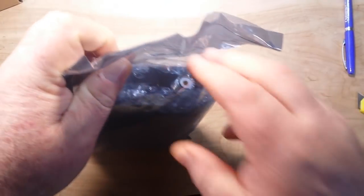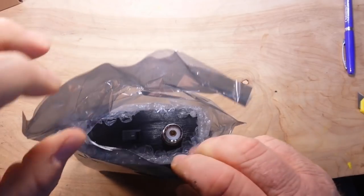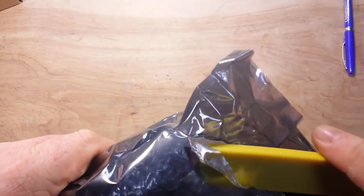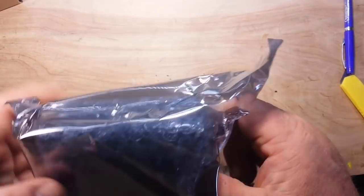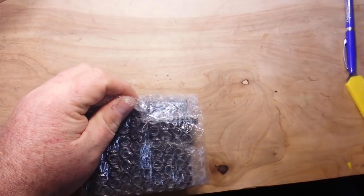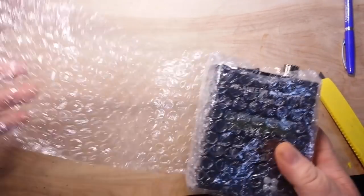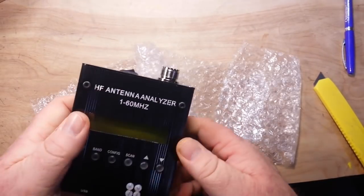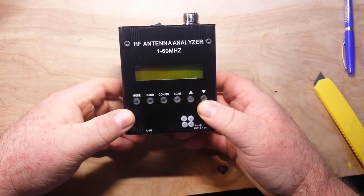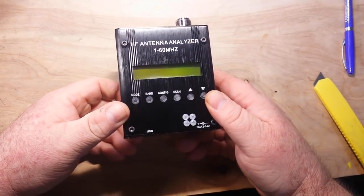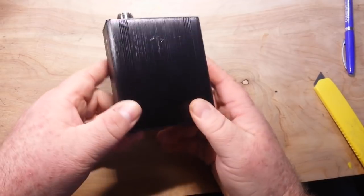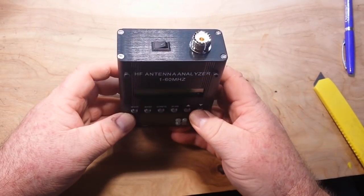Now if you're not in the amateur radio or ham radio, don't worry this isn't so much radio related as it is radio adjacent. So what we've got here, this is the MR300 antenna analyzer and this is going to tell us some very important things that we need to know in order to set up an antenna.